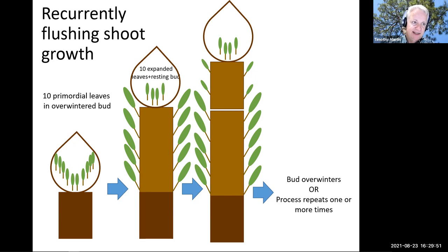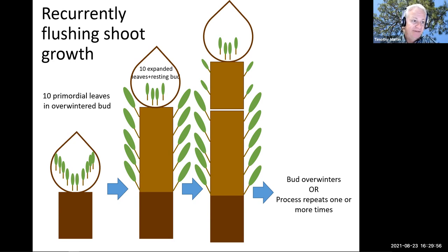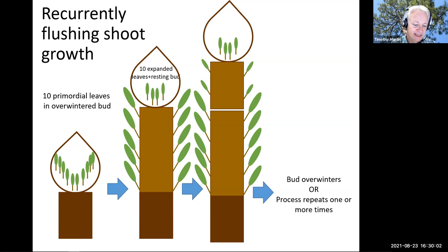That recurrently flushing pattern is typical of most southern pines, and there are some subtropical angiosperms with this pattern as well. This is similar to indeterminate shoot growth in that it allows for production of new growth as long as growing conditions are favorable. I've seen some especially young, intensively managed loblolly pine have five or six cycles of recurrent growth during a single growing season.